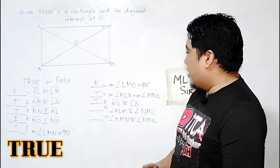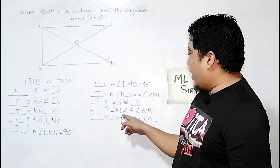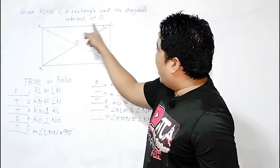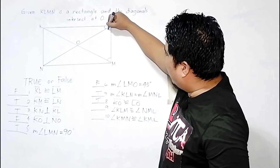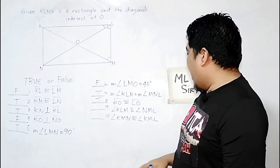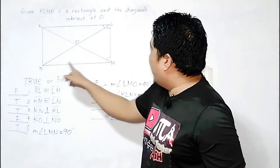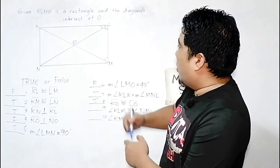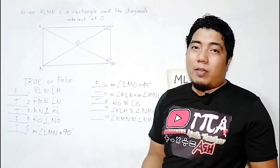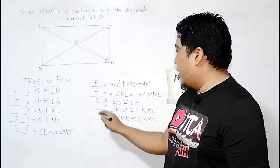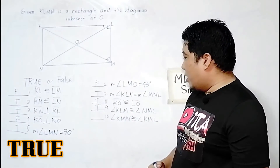Statement 9: Angle KLM is equal to angle NML. Since both angles are angles of the rectangle, they are both 90 degrees. Therefore, this statement is also true.